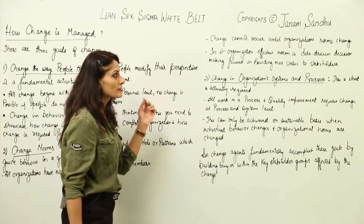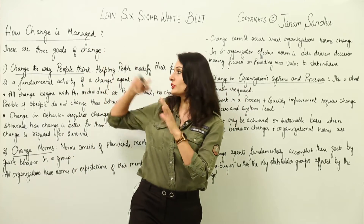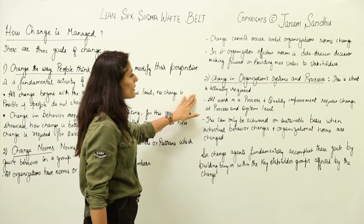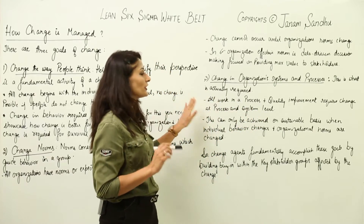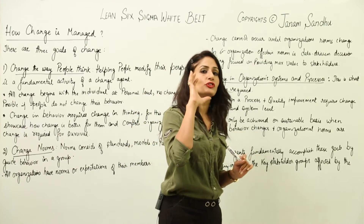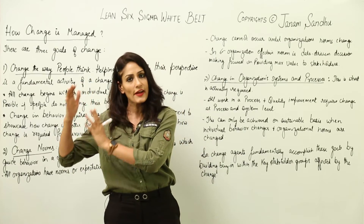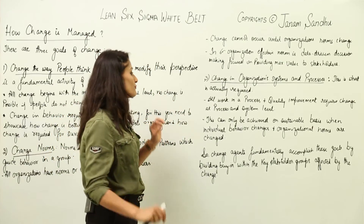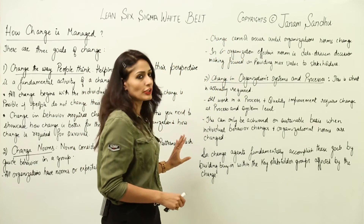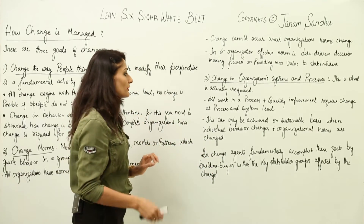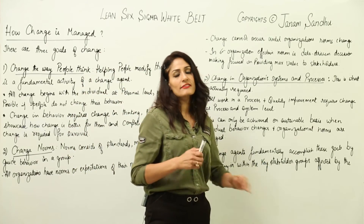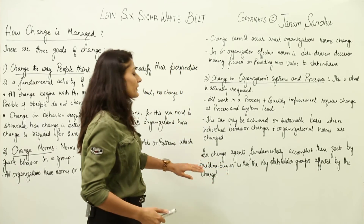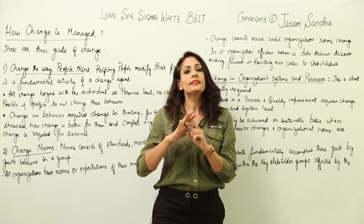The third goal is change in organizational systems and processes — this is the core of what Six Sigma aims to achieve. Whatever is accomplished at the individual level and in norms shows up here in systems and processes. All quality improvement requires change at the process and system level to produce defect-free products that meet specifications and customer requirements. This is only achievable on a sustainable basis when individual behavior and organizational norms have changed. Change agents accomplish this by building buy-in within key stakeholder groups — including suppliers, employees, and management — because until they are convinced the change is needed, they will not change.